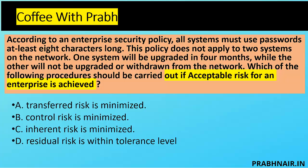Next coffee shot: according to enterprise security policy, all systems must use passwords at least eight characters long. This policy does not apply to two systems on the network — one system will be upgraded in four months, while the other will not be upgraded or withdrawn. Which procedure should be carried out if acceptable risk for the enterprise is achieved? Option A — removed control risk — is about ineffective controls. Option B — inherent risk is minimized — is also removed; the policy already identifies the systems and further action is being taken, so inherent risk is addressed.